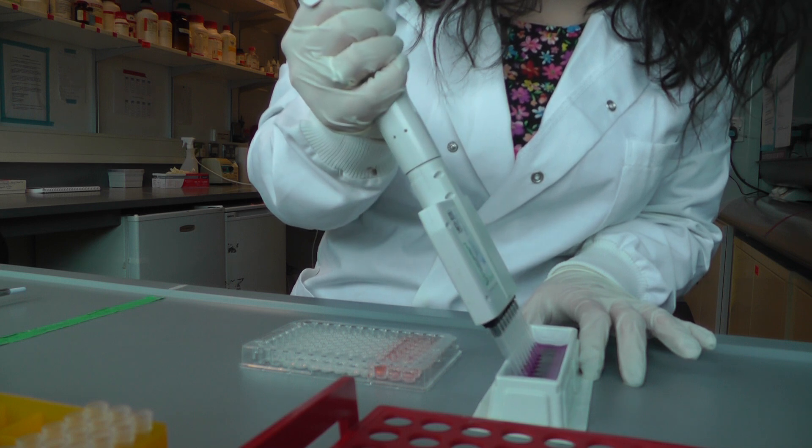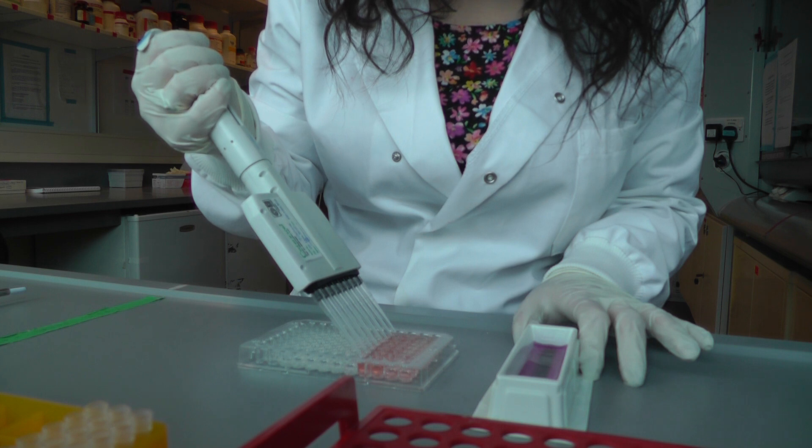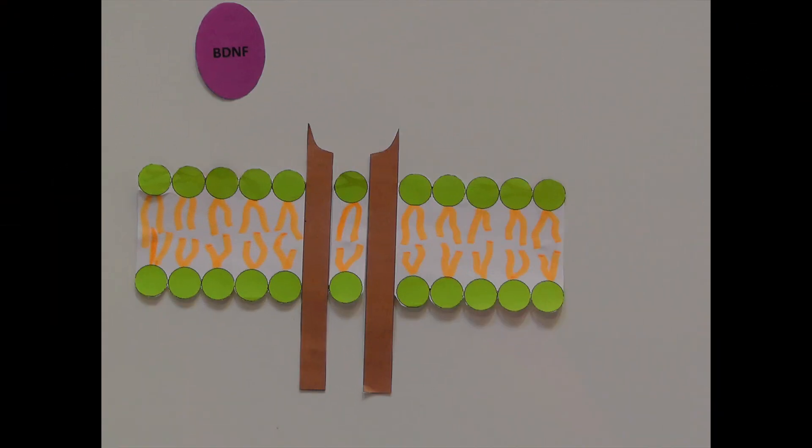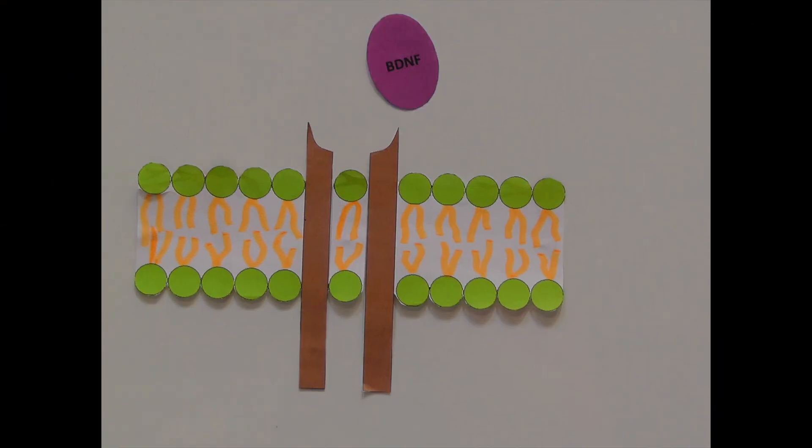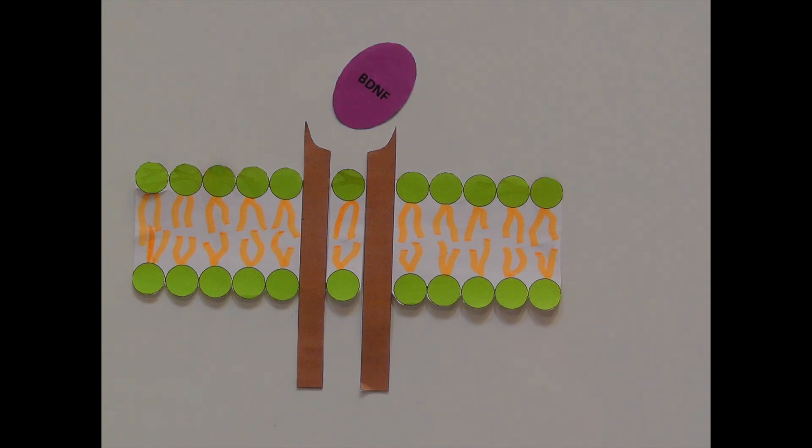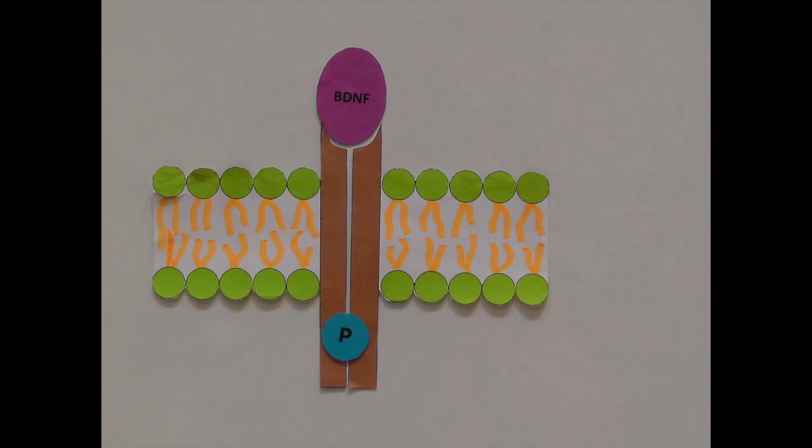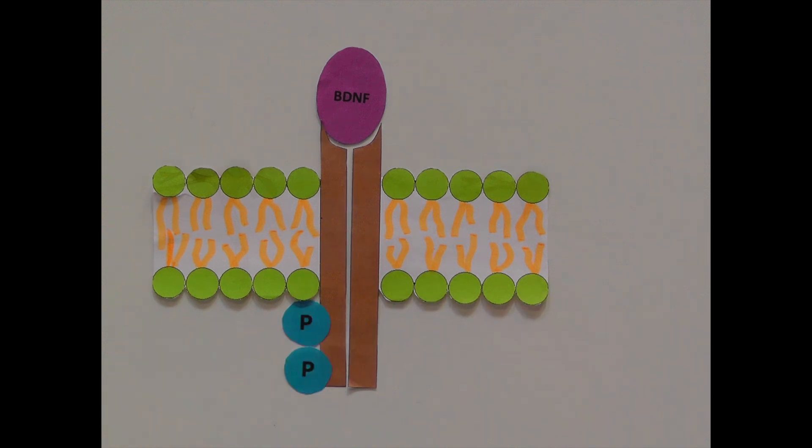One way that we do this is through exercise and the positive effect it has on the brain. One such effect is the increased production of BDNF, a protein that binds to TrkB receptors embedded in the membranes of cells in the hippocampus and induces internal cellular signals that go on to boost neuronal proliferation, support neuronal survival and protect from neuronal death.